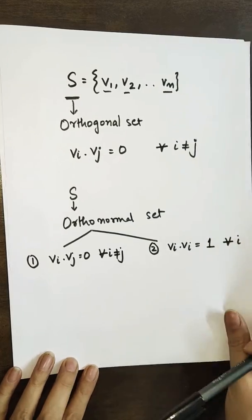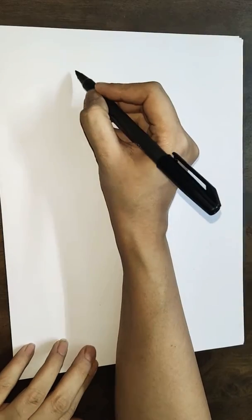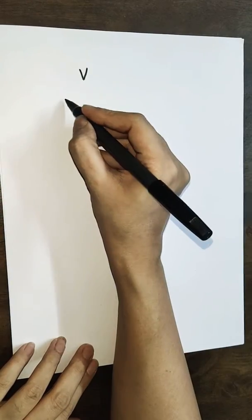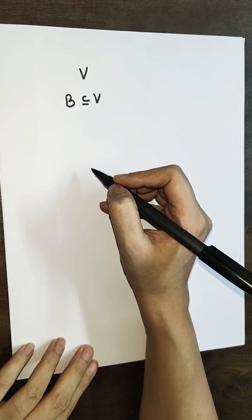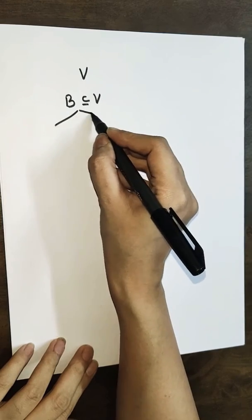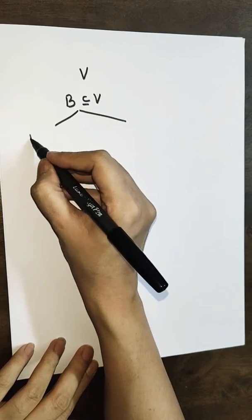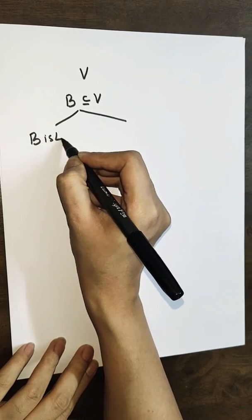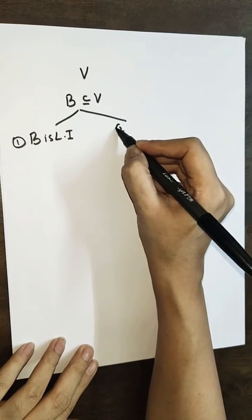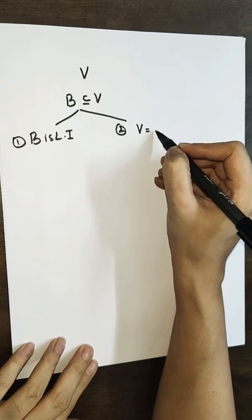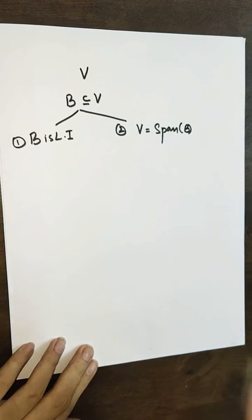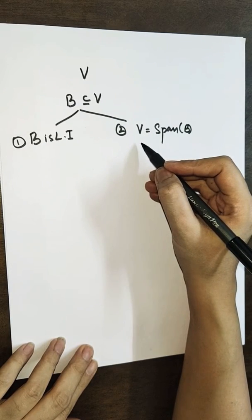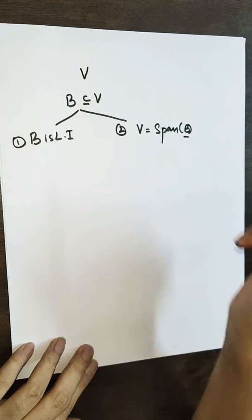Moving ahead, I would like to talk about the basis of a vector space. We know that if we have a vector space V, then any subset B of V is said to be a basis for V if two conditions are satisfied: first, B is linearly independent; and second, B spans V, meaning V equals span(B). That means any vector of V can be written as a linear combination of elements of B.